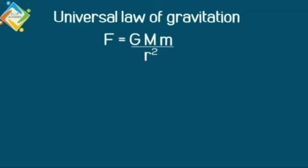Now, let us see what is the mass and radius of Earth and Moon. Mass of the Earth is 5.98 into 10 raised to 24 kg. And radius of the Earth is 6.37 into 10 raised to 6 meter. Mass of the Moon is 7.36 into 10 raised to 22 kg. And radius of the Moon is 1.74 into 10 raised to 6 meter.